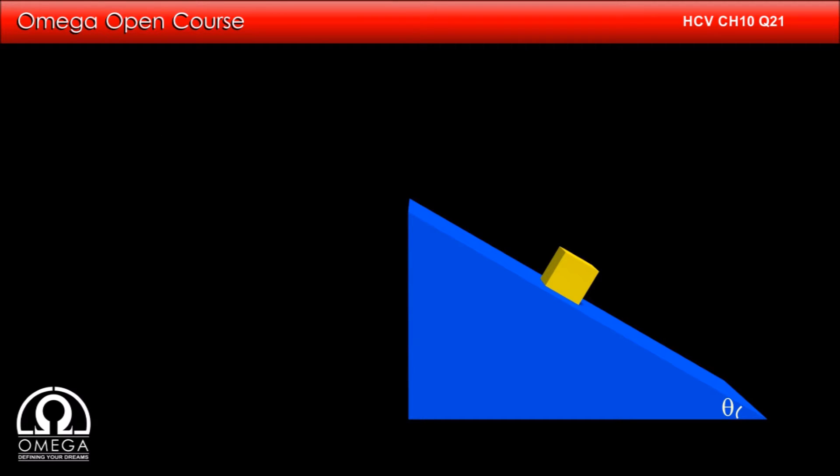Let us draw the free body diagram of the block. Gravitational force of Mg acts on it at the center of mass in vertically downward direction. The component of gravity along the incline is Mg sin theta and perpendicular to the incline is Mg cos theta. The surface will apply normal contact force in direction perpendicular to the surface and friction force up along the incline.